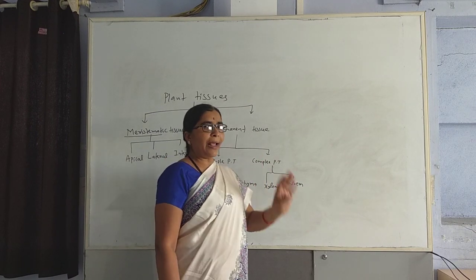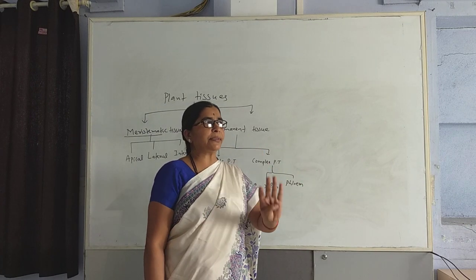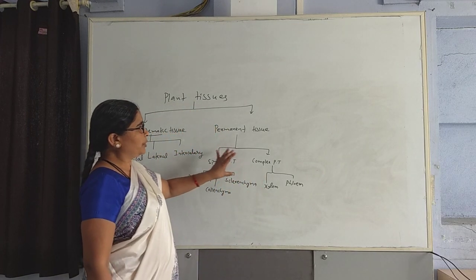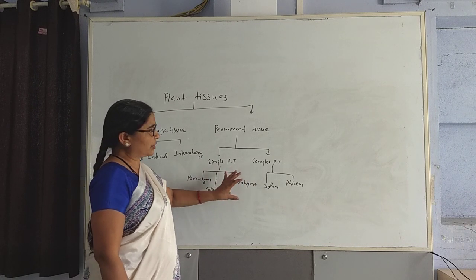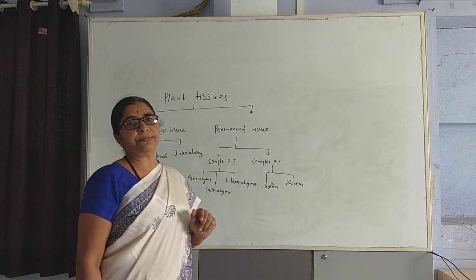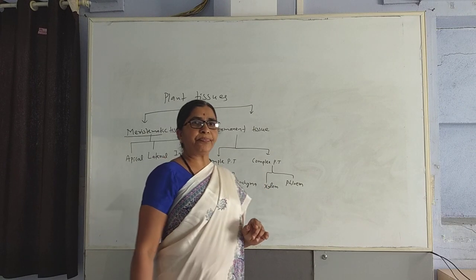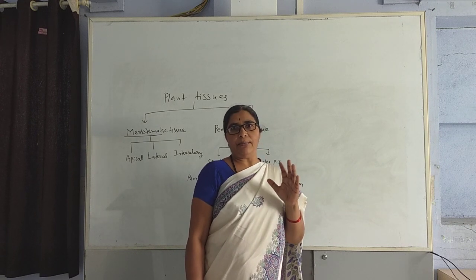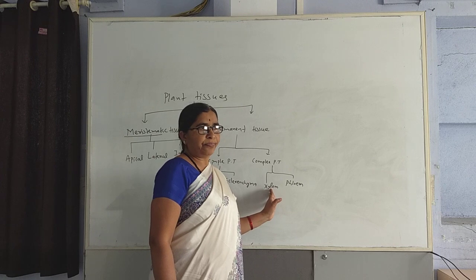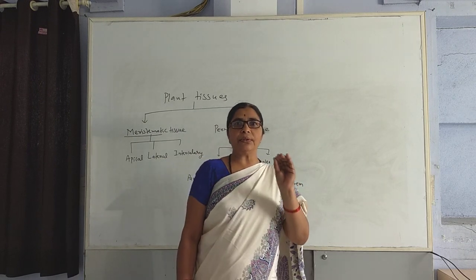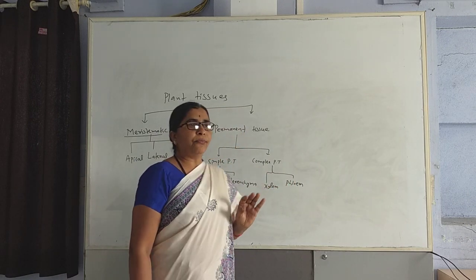Xylem tissues have four types of cells, and phloem tissue also has four types of cells. When we compare simple permanent tissue and complex permanent tissue, simple permanent tissue cells have a common structure and perform a common function. In complex permanent tissue, the cells of the xylem have a slightly different structure and perform different functions, but they have a coordination. All the cells of the xylem perform the main basic function to transfer water and minerals from roots to other parts of the plant.